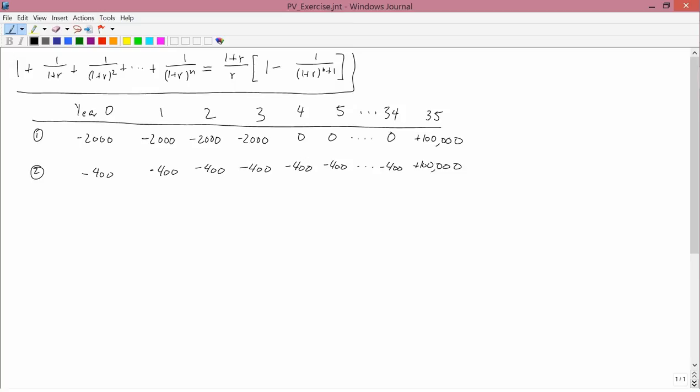Suppose one is trying to choose between two investments. I'll call them investment 1 and investment 2. In investment 1 you pay $2,000 immediately, which I'll call year 0, $2,000 in year 1, $2,000 in year 2, $2,000 in year 3. Then nothing happens in years 4 through 34. And finally in year 35 you receive a payment of $100,000. So for investment number 1 you pay $2,000 a year for the first four years and then you receive $100,000 in year 35.